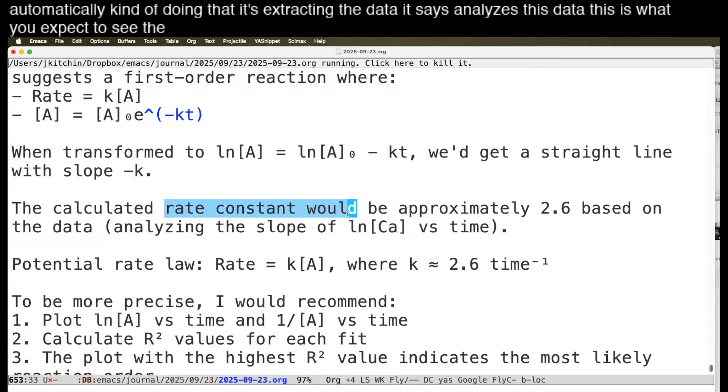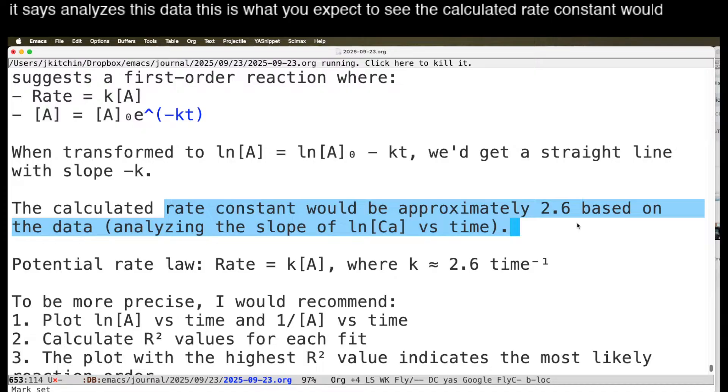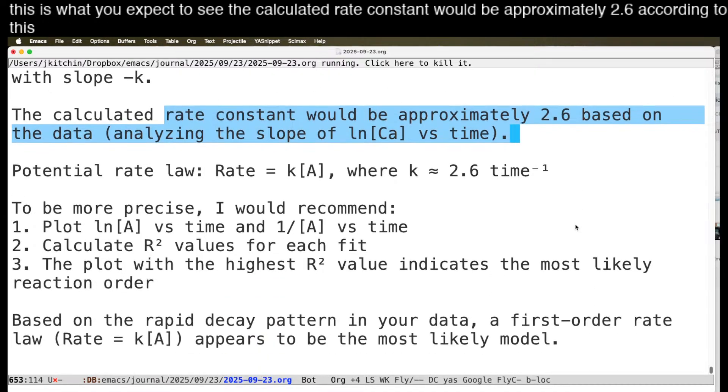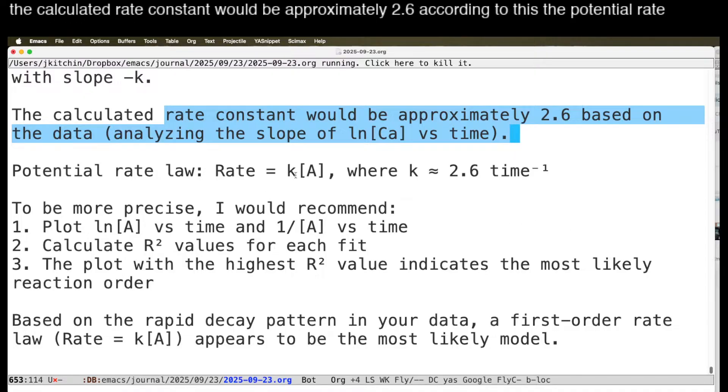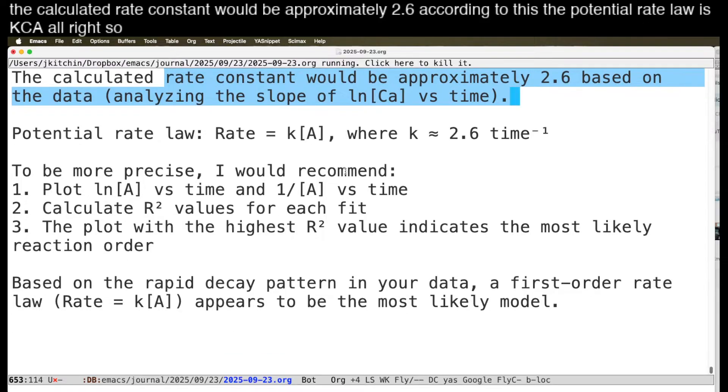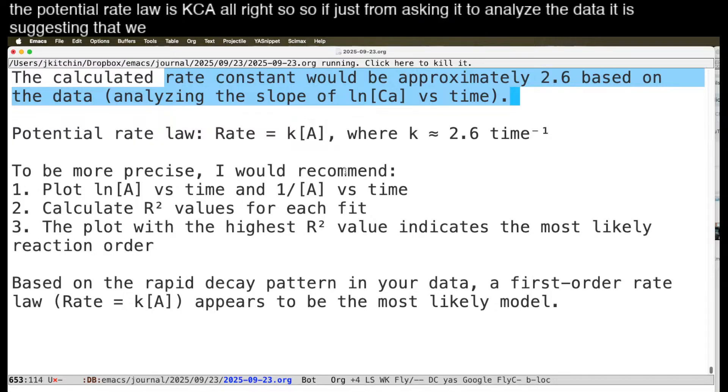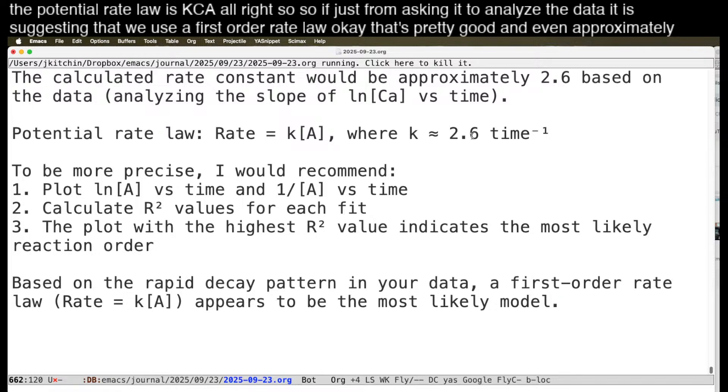This is what you expect to see. The calculated rate constant would be approximately 2.6, according to this. And the potential rate law is KCA. Alright. So just from asking it to analyze the data, it is suggesting that we use a first-order rate law. Okay. That's pretty good. And even approximately K equals 2.6.